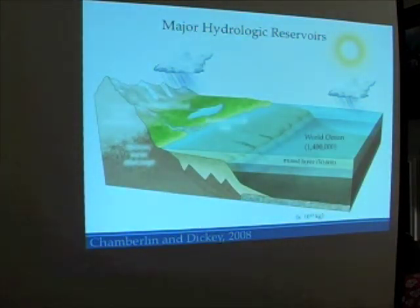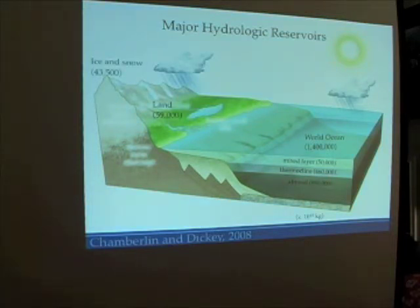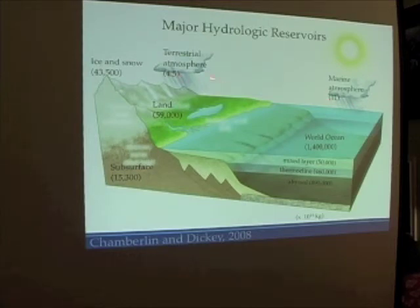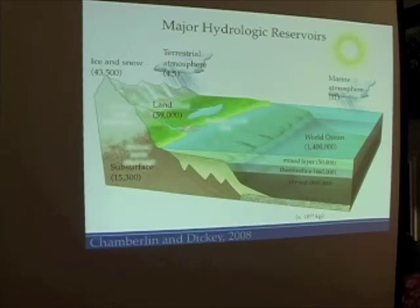The major hydrologic reservoirs include the world ocean, divided into the mixed layer, the thermocline layer — basically the layer between the warm surface waters and the cold abyssal waters. The atmosphere is a reservoir for water, divided into the marine atmosphere and the terrestrial atmosphere. Ice and snow is also a major reservoir, including the polar ice caps. And water on land, both in lakes and rivers, subsurface water, and groundwater.